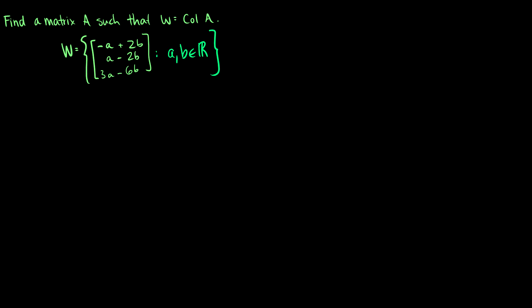So we need to find a matrix A that produces the span. So W is actually equal to the span of some matrix A. So we can rewrite W and we can factor out the A and the B and we can separate them into two vectors. So we can factor out an A and we're going to get negative 1, 1, 3.